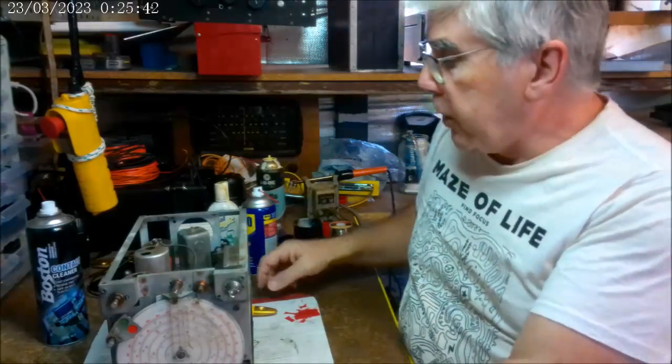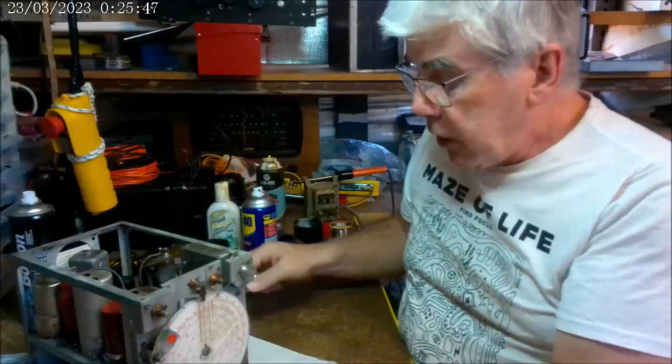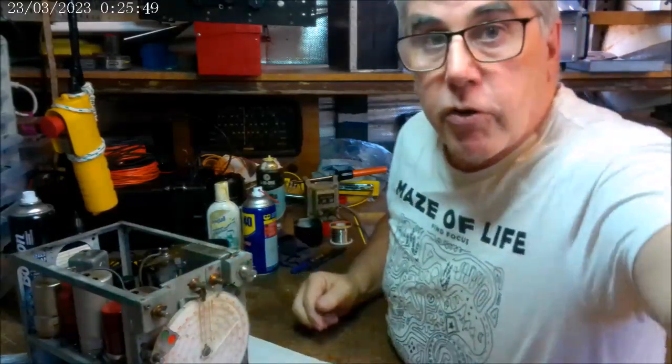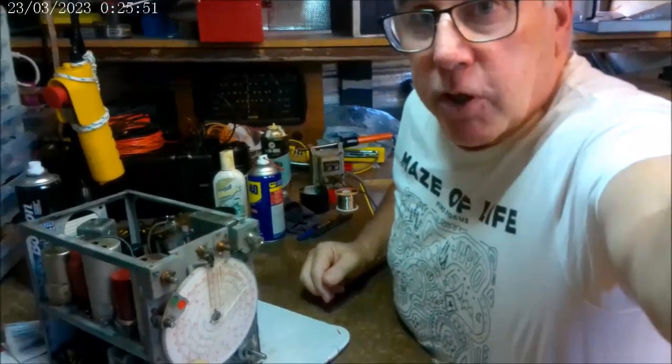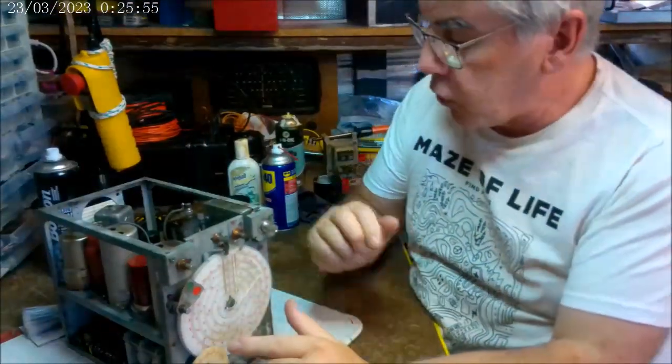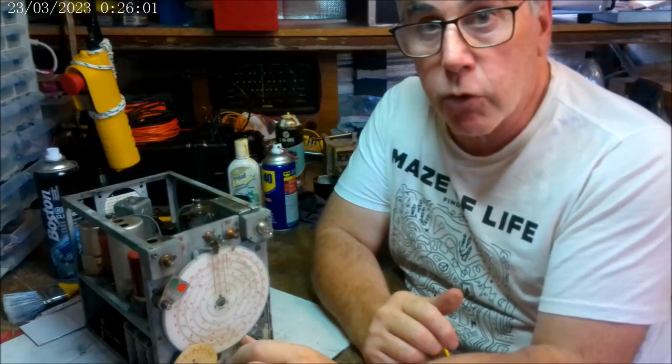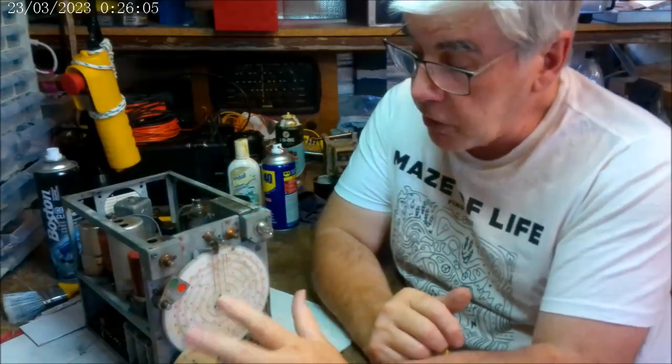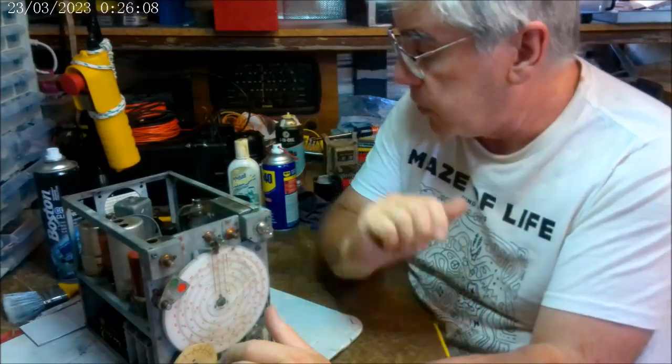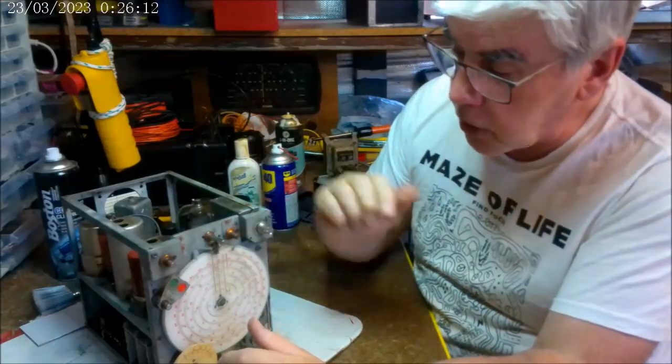The other good thing about contact cleaner is that you can use it on delicate components. Now, one of the most concerning aspects of this radio is this dial face. This is a fairly complex dial face. It's made of plastic, which means that you don't want to use any kind of aggressive chemicals on it, or indeed any kind of aggressive techniques whatsoever. I wouldn't even use a toothbrush on this. I might use a light brush of this type to remove dust and so on.